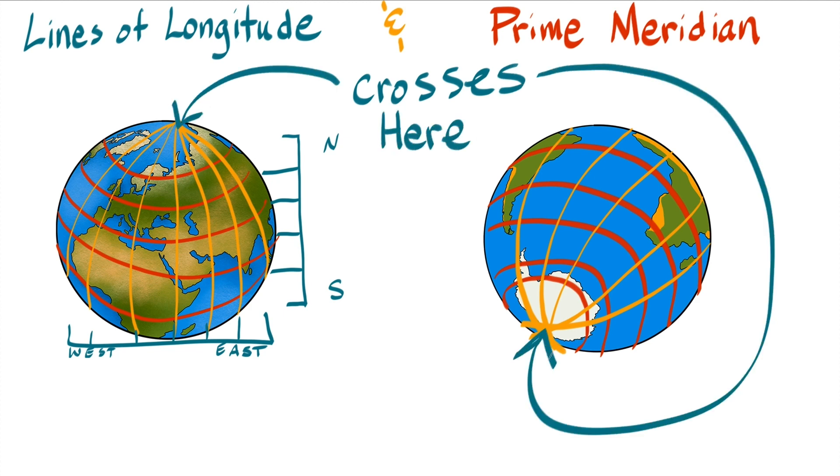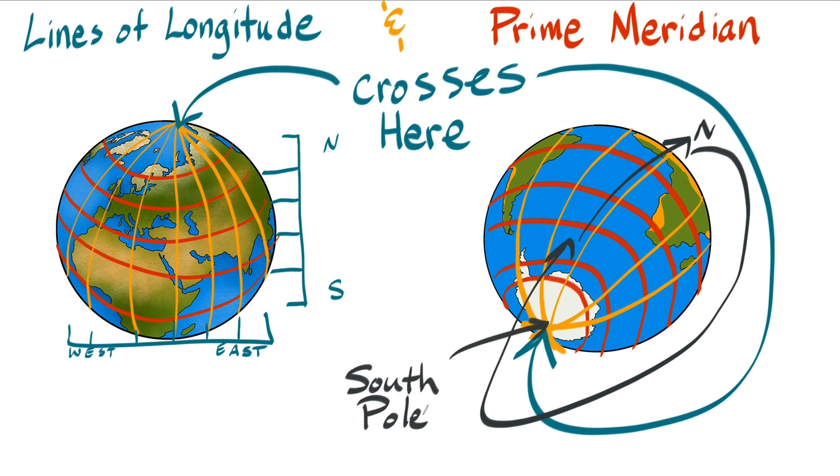So traveling north along a meridian means you will eventually get to the North Pole, and if you kept following that same line, because the earth is round, it would eventually lead you to the South Pole also.